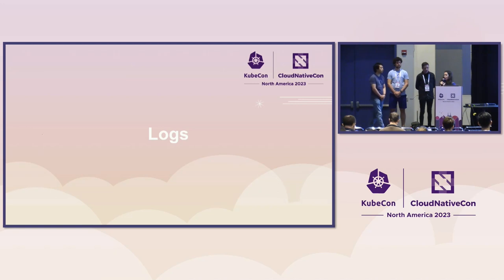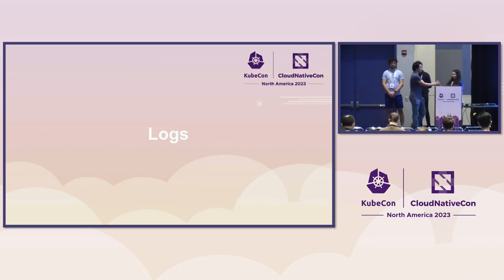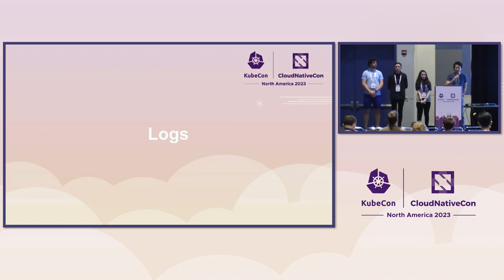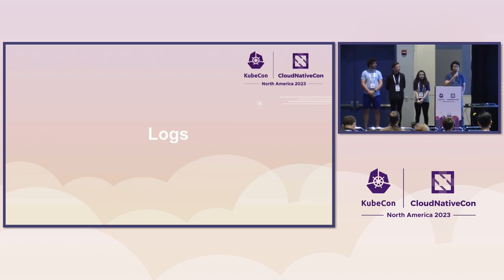That's it about metrics. Up next to talk about logs is Han. In Kubernetes, we use a library called Klog — short for Kubernetes Logger. It is forked from a different library called Glog, short for Google Logger, and it's been heavily modified and adapted for Kubernetes. It knows how to parse Kubernetes objects into a string-friendly format.